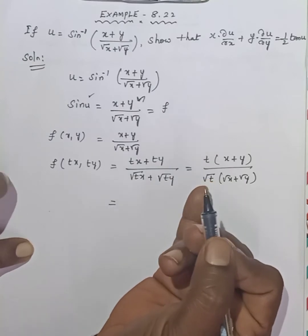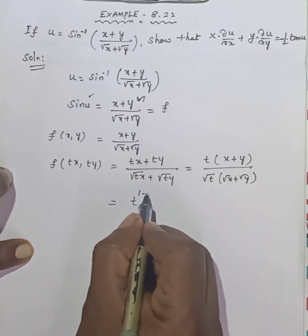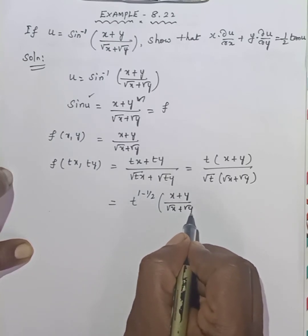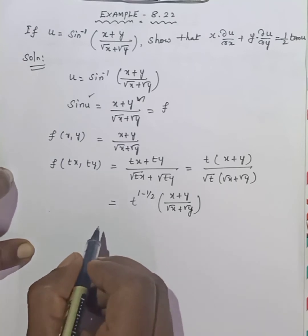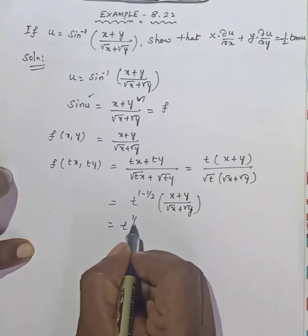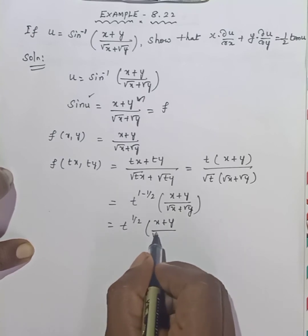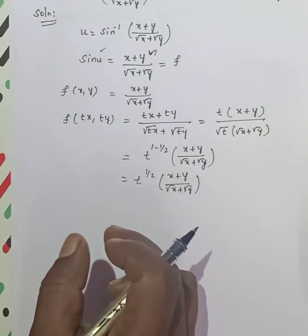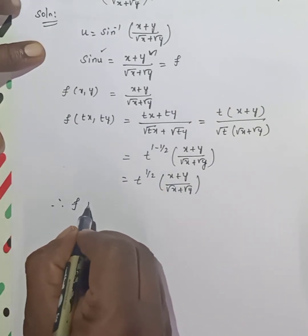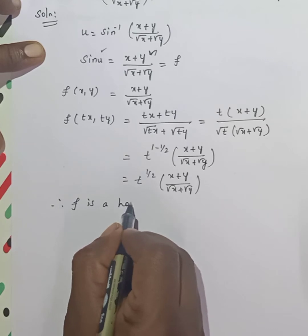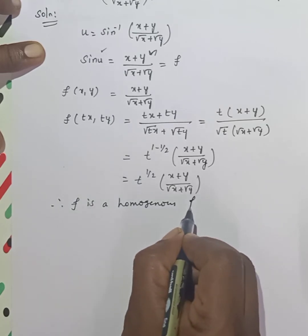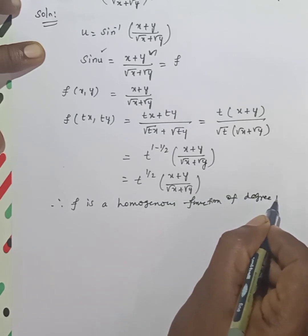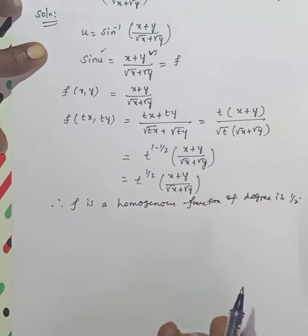So we have t divided by root t — that is t to the power one minus one-half — times (x plus y) divided by (root x plus root y). This equals t to the power one-half times f(x, y). Therefore f is a homogeneous function of degree one-half.